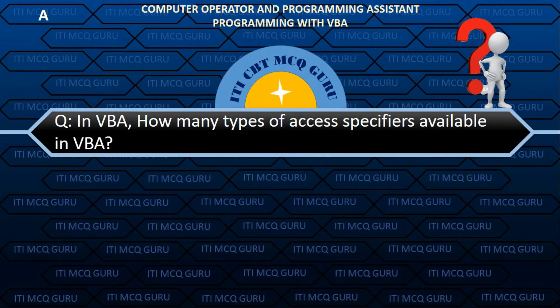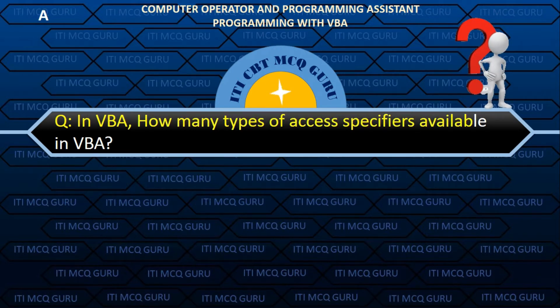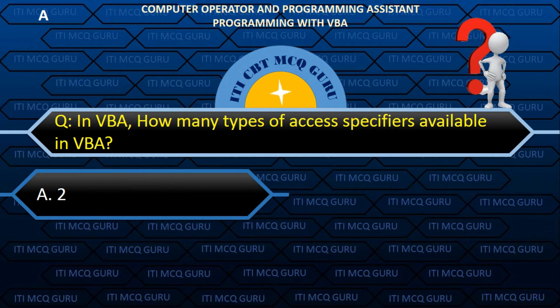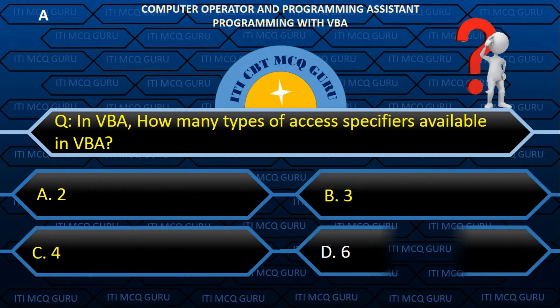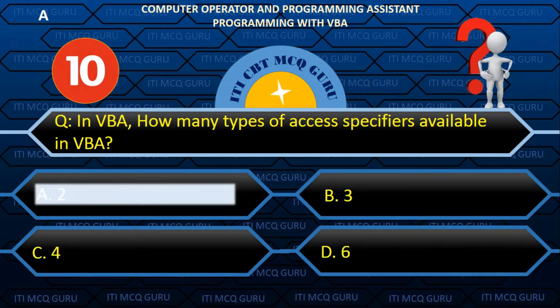In VBA, how many types of access specifiers are available? Answer: A. 2.